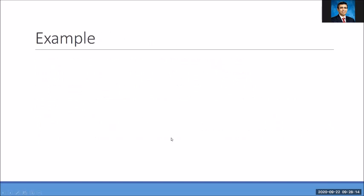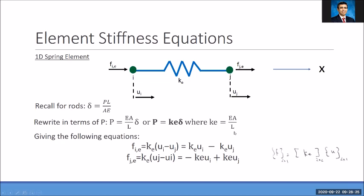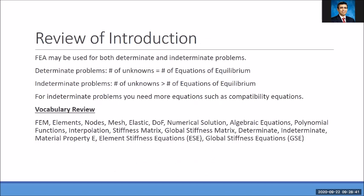One important thing: the stiffness for a bar element is k = EA/L, where A and L are properties of the element and E is a material property. This tells us that in order to use the stiffness method, we need the material property E. When we use the stiffness equations or the finite element method, even if it's a determinate problem, we are going to need to use the material property E — unlike classical statics where you never have to provide material properties for a determinate problem.